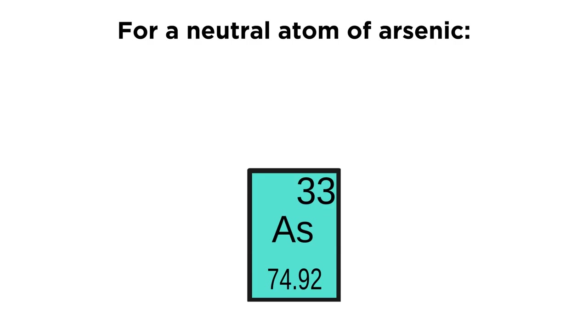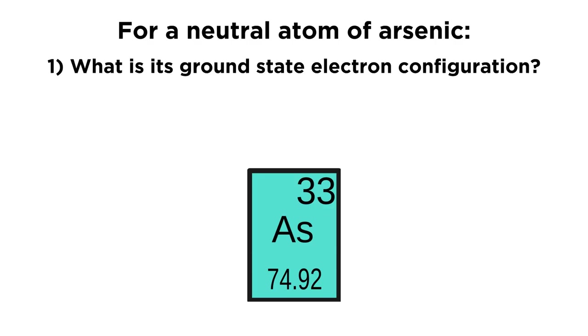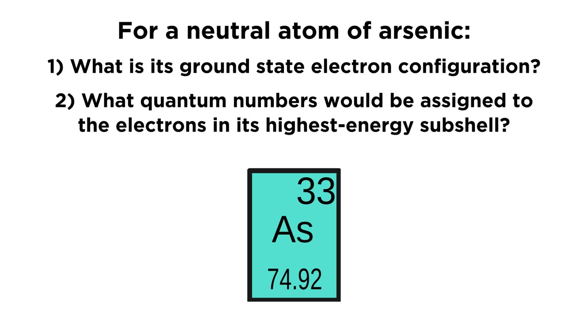So the question is, for a neutral atom of arsenic, first, what is its ground state electron configuration? And two, what quantum numbers would be assigned to the electrons in its highest energy subshell?